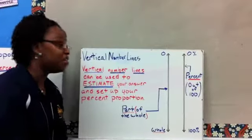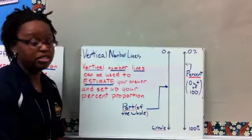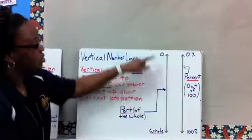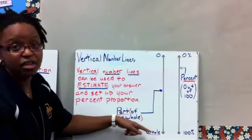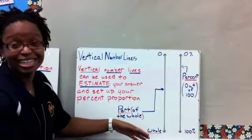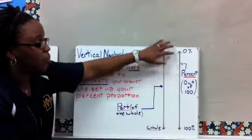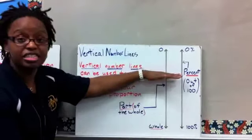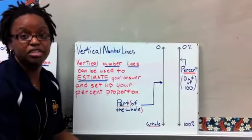We can use vertical number lines to estimate the answer and set up our percent proportion. With the vertical number lines, we have two number lines. One represents whatever we're talking about in that problem, so if that's money or the number of students in a class. And then we've got our percent number line, which will always be our percent that is out of 100. And we'll kind of benchmark these number lines to determine or estimate where our answer should be to a problem.